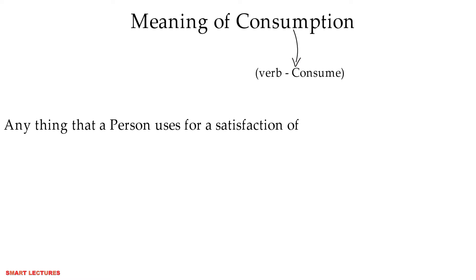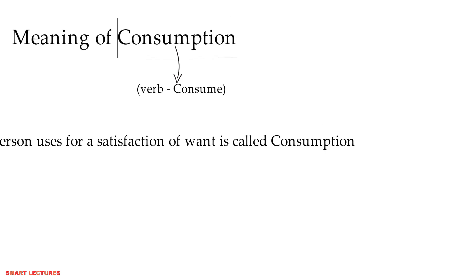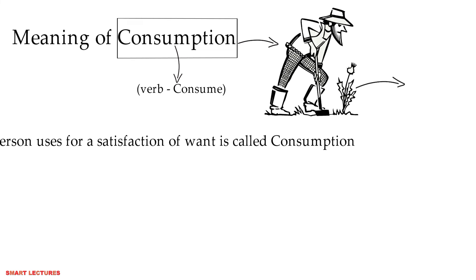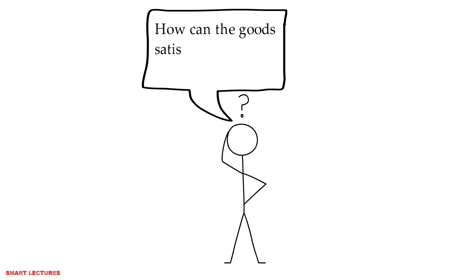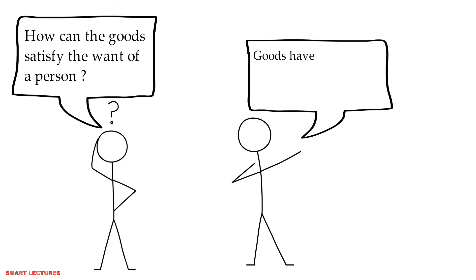Let's learn the meaning of consumption now, and the verb is consume. Anything that a person uses for satisfaction of want is called consumption. Consumption means to use goods to satisfy the want. Now the question is how can goods satisfy the want? Because goods have the utility or capability to satisfy the want.